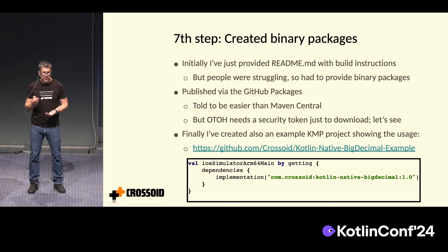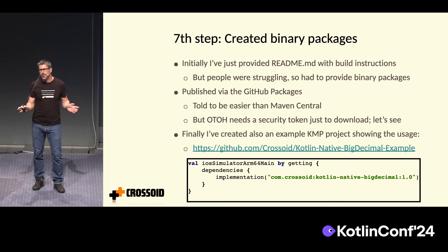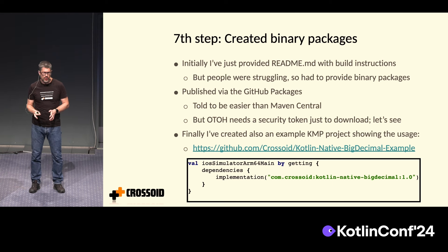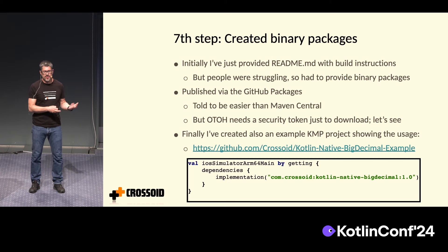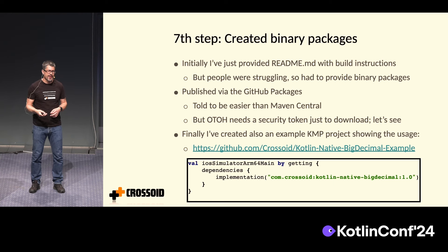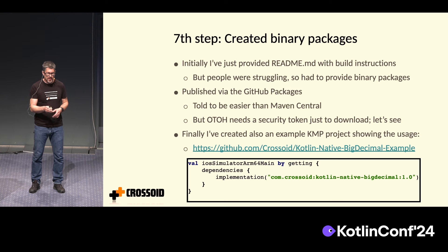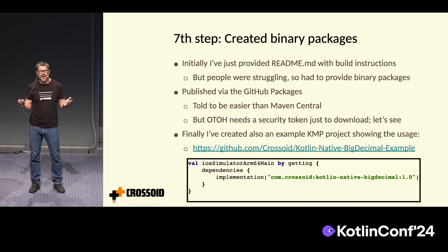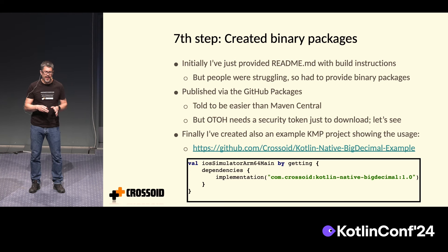The last step was creating binary packages. For about a year I had put it only on GitHub with a lot of documentation on how to achieve that, but people were a bit unhappy. So for this talk, I created binary packages. I tried GitHub Packages — there's one inconvenience in that you have to generate a token to download the packages, but it's all described in the readme. In the end, in your multiplatform project you can just add the implementation for simulator or the actual ARM device. For Java, there's no work — it's part of the platform and just compiles. For iOS, you do this, and as long as your code using BigDecimal is in the common main, it will just work.